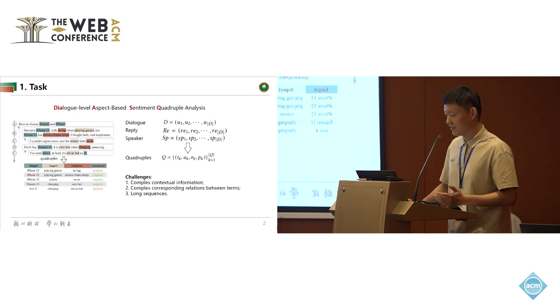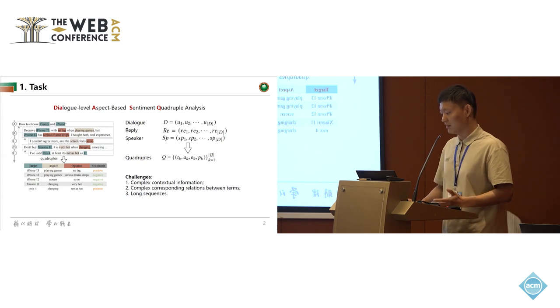It's a practical task because it can help improve products or services based on customer feedback from social media, such as Twitter and Weibo. As shown in the figure, given a multi-turn and multi-party dialogue, the goal of the task is to extract target, aspect, opinion, sentiment quadruples.